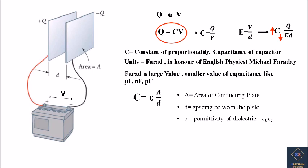Let us see how these parameters affect the capacitance of a capacitor. If the area of the conducting plate increases, then the capacitance increases. If the spacing between the plates increases, then the capacitance decreases. Similarly, if the permittivity of the dielectric increases, then the capacitance will increase.